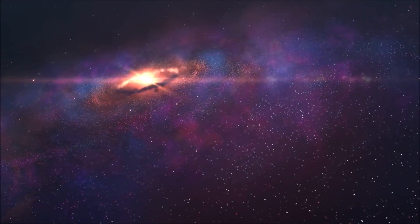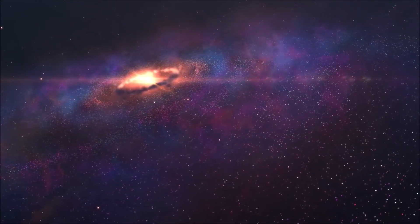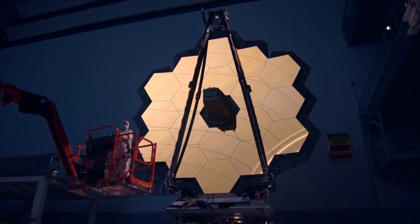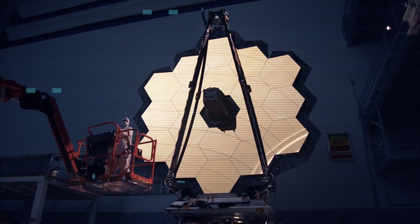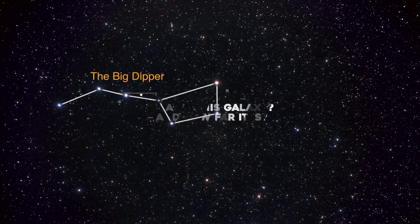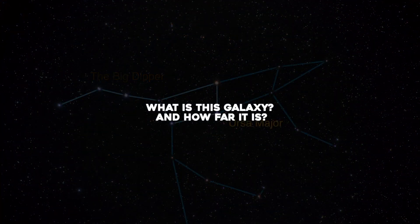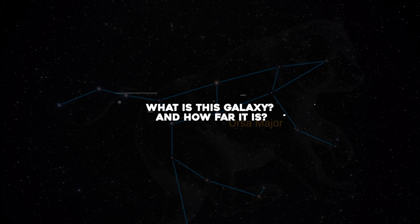So, just a week after its first images were shown to the world, the James Webb Space Telescope may have found a galaxy that existed 13.5 billion years ago. What is this galaxy and how far is it? Let's find out.